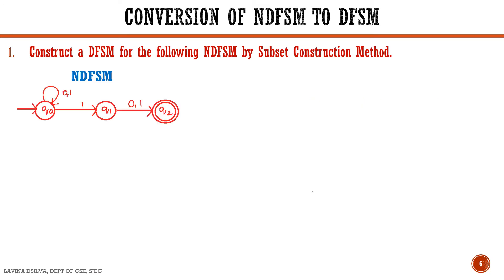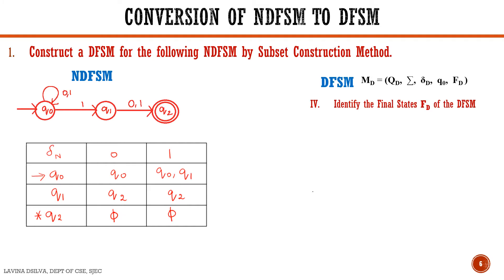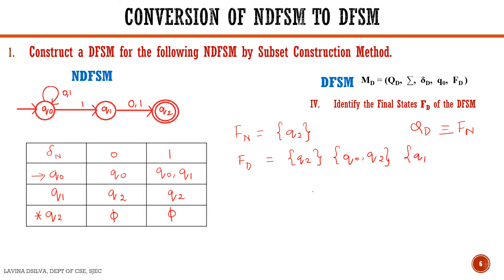The next step is to identify the final states FD of the DFSM. The final state of the NFSM, FN, equals {Q2}. Therefore FD consists of all subsets of QD which contain FN. These are: {Q2}, {Q0, Q2}, {Q1, Q2}, and {Q0, Q1, Q2} as the final states of the DFSM.